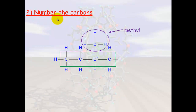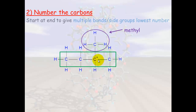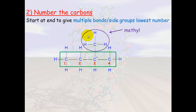The next step is to number the carbons in the longest carbon chain. What's really important is that we give any side groups the lowest number possible. I can number them one, two, three, four along the bottom — this gives the side chain a number of three. If I start from the other side: one, two, three, four — this gives the side chain the number two. So we always number so that the side chains have the lowest number. The correct version starts numbering from this direction: one, two, three, four.